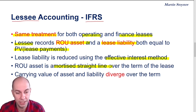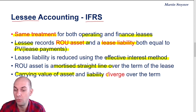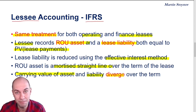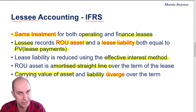The big implication here is that the book value of the asset and the book value of the liability will diverge over the term of the lease, because they're being reduced and amortized at different rates.